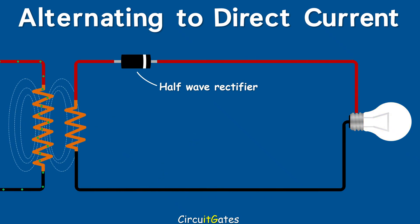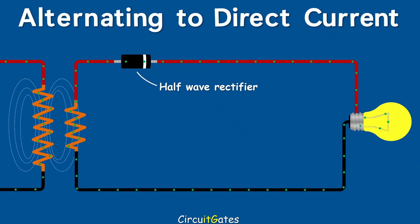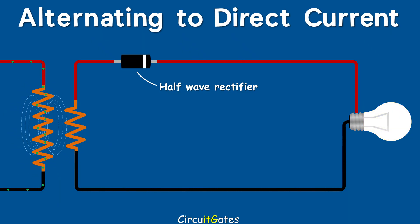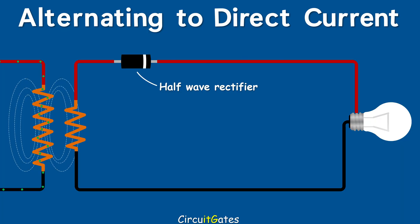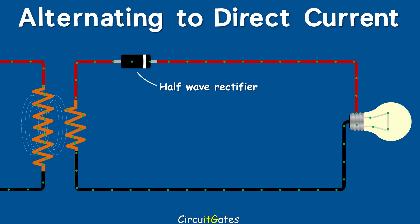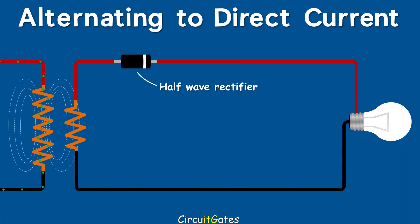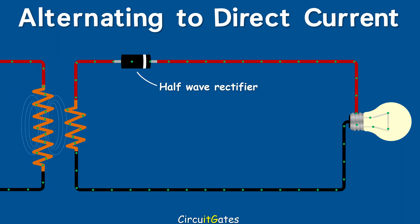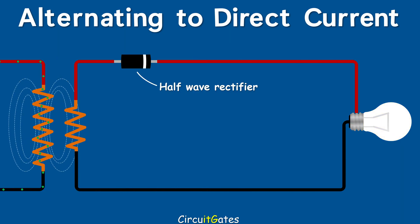A half-wave rectifier is one diode connected in series with the load. In a half-wave rectifier, when AC voltage flows in the first direction, the diode is forward biased and current flows through the load. When AC changes direction, the diode is reverse biased and current is blocked. In a half-wave rectifier, the other AC half-cycle is wasted. This type of rectifier has an efficiency of 4.6%.